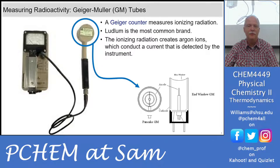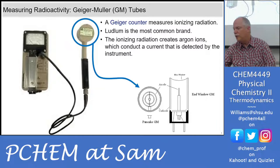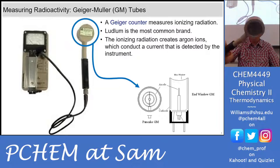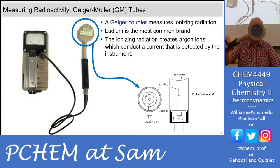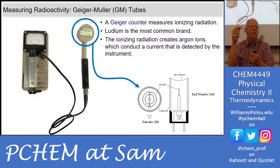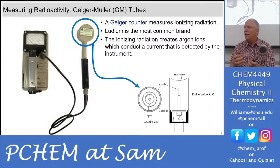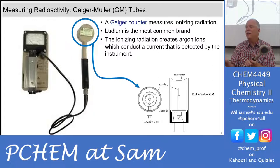This is how we measure radioactivity — these are Geiger-Mueller tubes. They have a little chamber, and this is a pancake probe — you can see it looks like a pancake. Inside there's a thin mylar film that alpha or beta particles can pass through. If it's a gamma ray, it's not stopped by most things — it requires a large nucleus to absorb it.